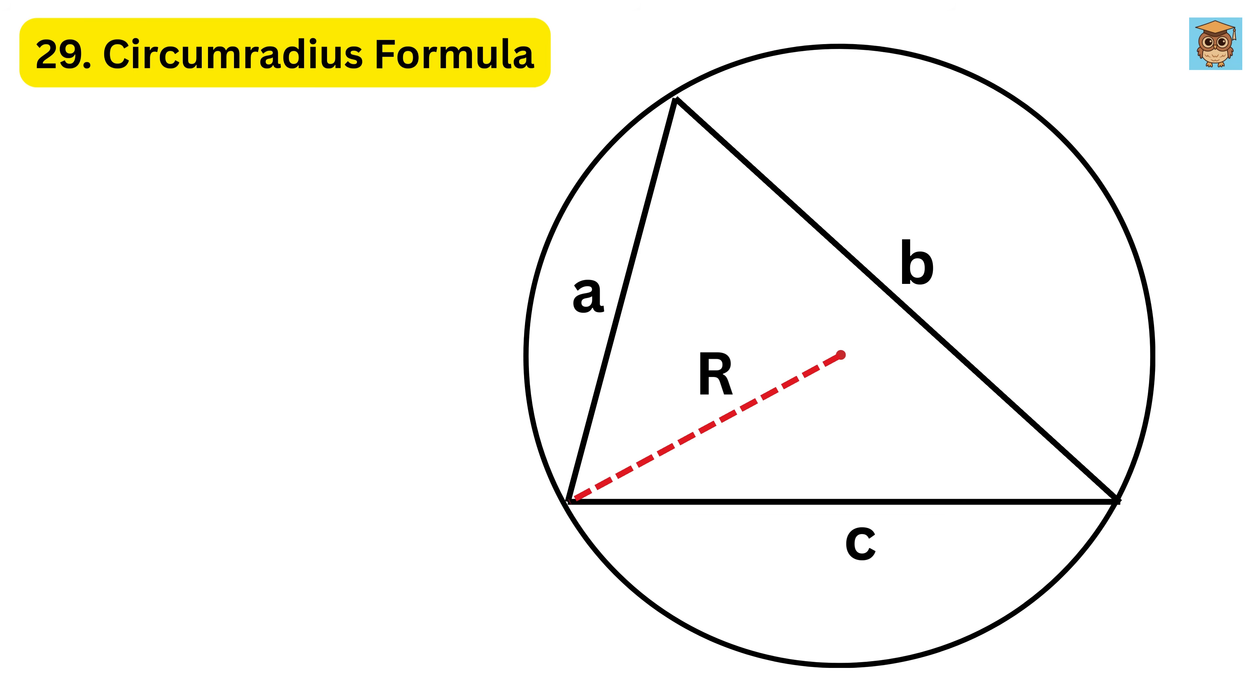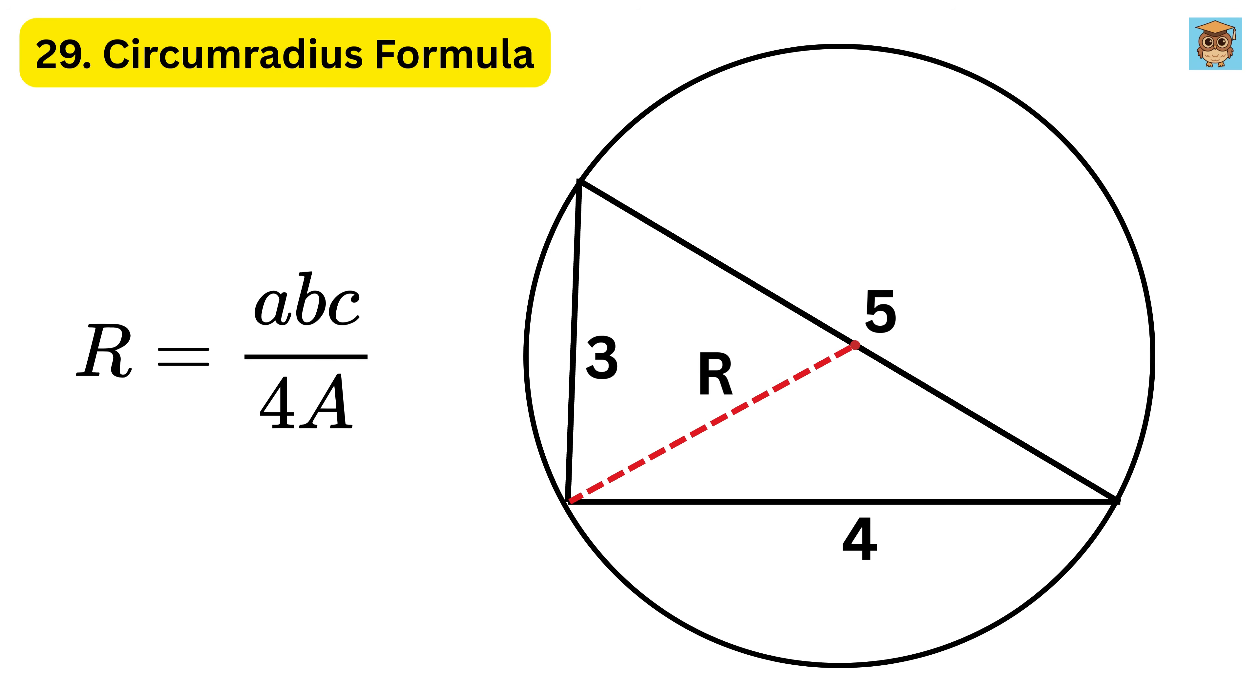29. Circumradius formula helps us find the size of the big circle that goes around the triangle, called the circumcircle. The formula is A times B times C divided by 4 times the area. So if the sides are 3, 4, and 5, and the area is 3 times 4 divided by 2 or 6, then the circumradius R is 3 times 4 times 5 divided by 4 times 6, which is 60 divided by 24, or 2.5.